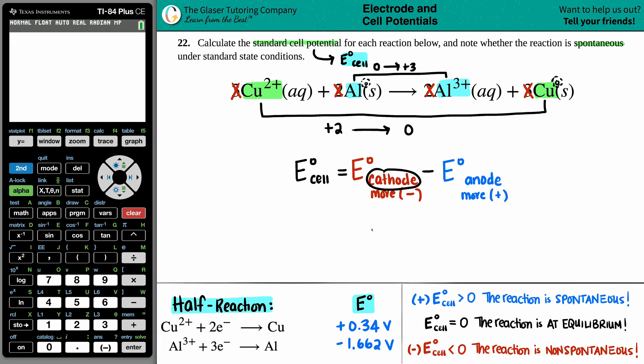Remember, reduction always happens at the cathode. And that's when you gain electrons, you become more negative. Anode is oxidation and you lose electrons, you become more positive. So we already did the hard part. We already took that charge difference. Now we just have to go back and say, okay, for the copper, I went from a plus 2 to a 0. Is that becoming more positive or more negative? It's becoming more negative. And if it's becoming more negative, that's the cathode.